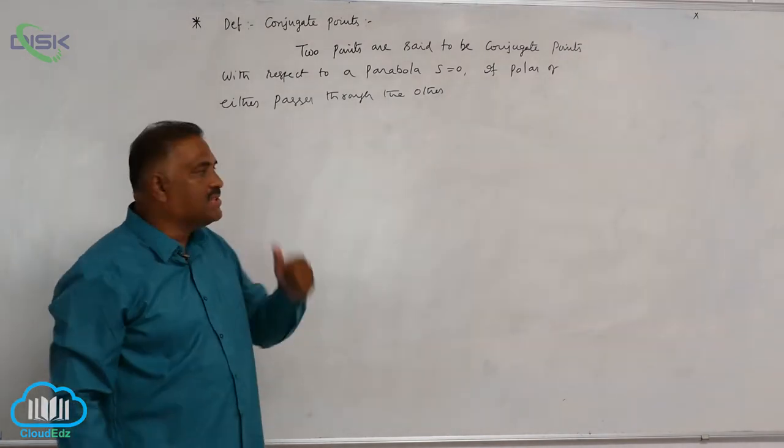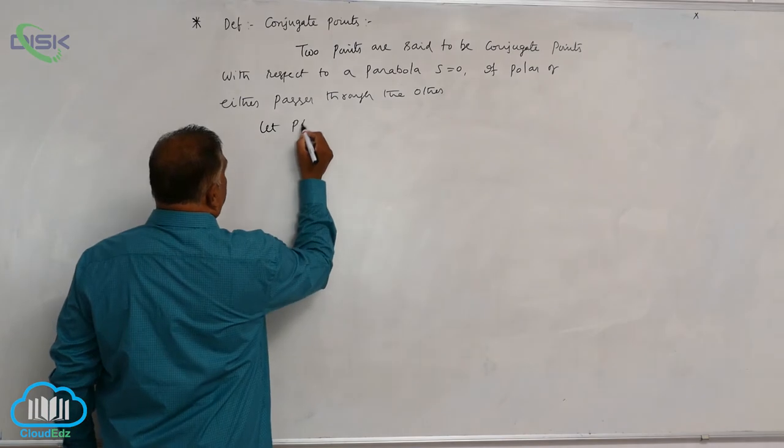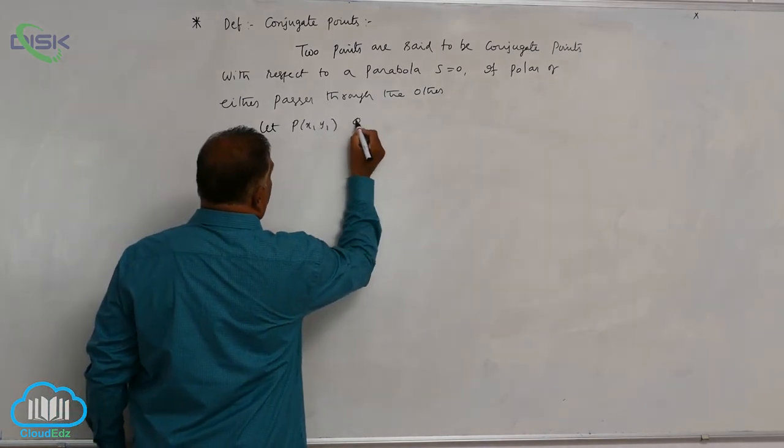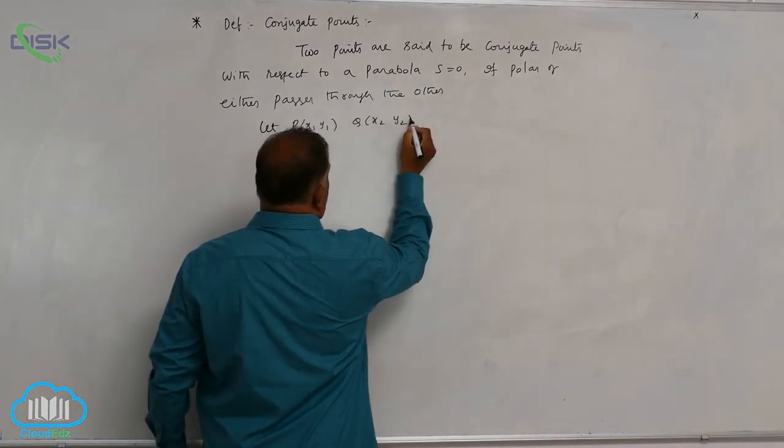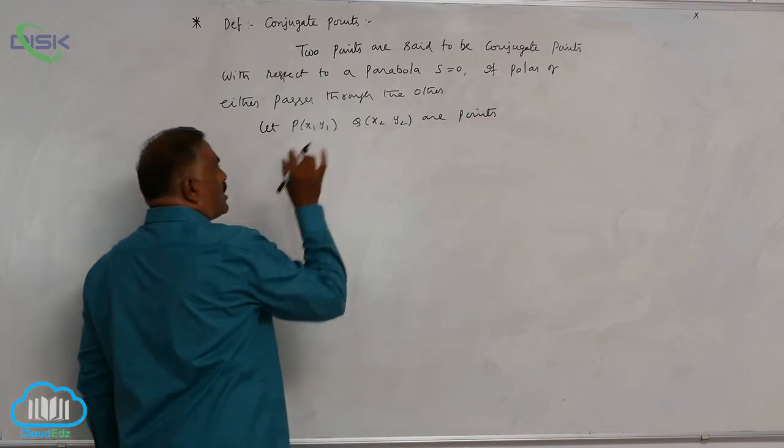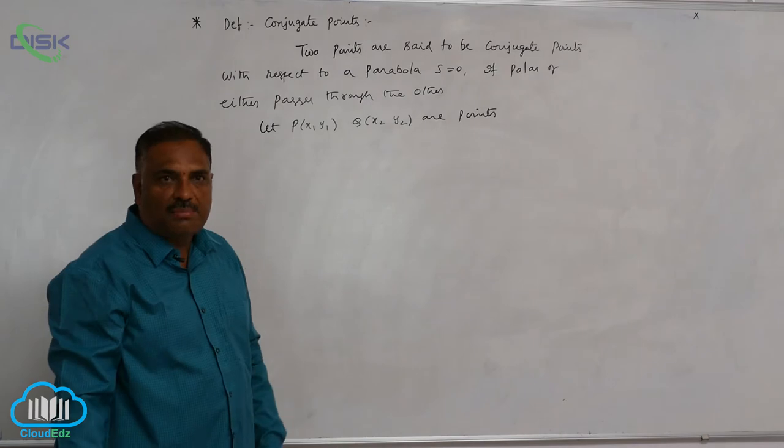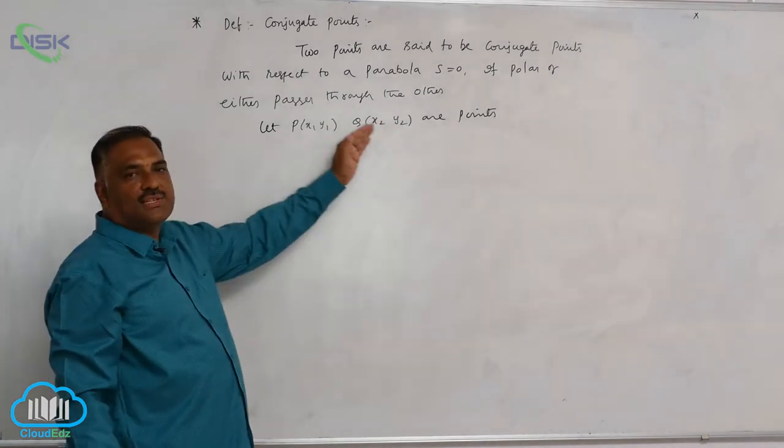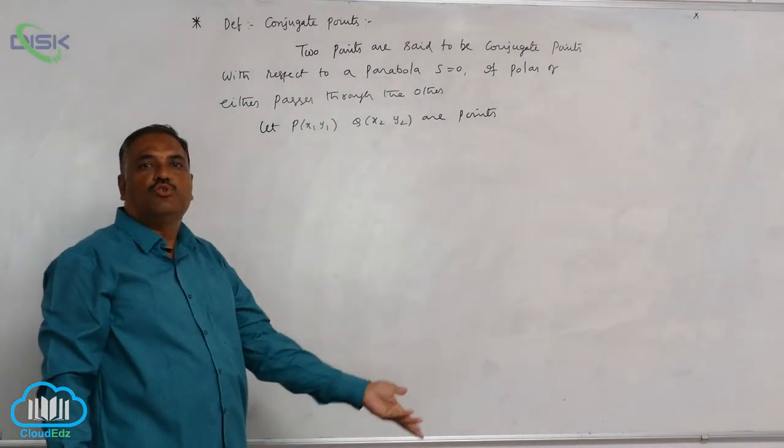Now let us consider two points. Let P (x₁, y₁), Q (x₂, y₂) are two points. Now to prove that these two are conjugate points, we have to claim that polar of P passes through Q and polar of Q passes through P.